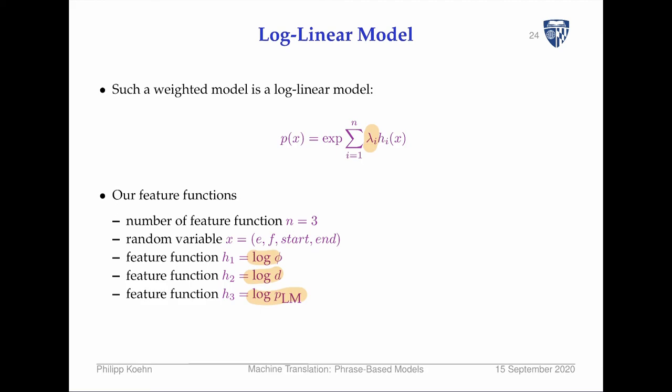In this case we have three features — these three feature functions — and we weight them. To make them probabilities we could take the exponent, but in practice we don't actually care about the actual probability.